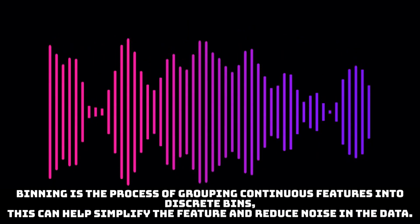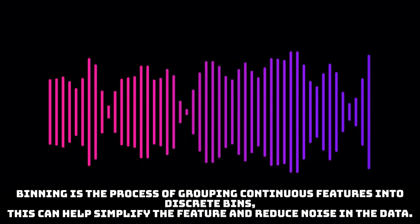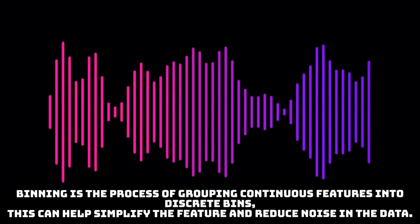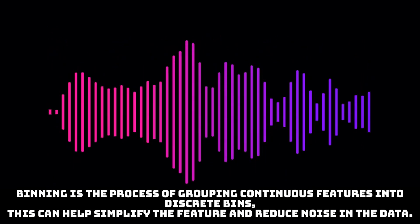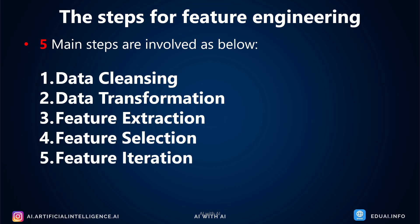One technique used in feature iteration is binning. It's the process of grouping continuous features into discrete bins. This can help simplify the features and reduce noise in the data. What it is and how it works, we'll see in future videos.